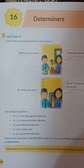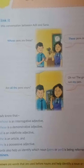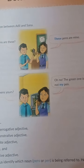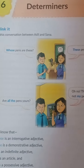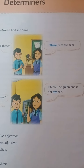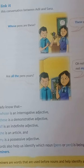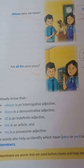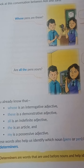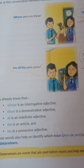Hello students, today we are going to learn determiners. You can see over here certain sentences in your book: whose pen is this? This pen is mine. All the pens are yours. The green one is not mine. Let us see: 'whose' is an interrogative adjective, 'these' is a demonstrative adjective, 'all' is an indefinite adjective, and 'the' is an article.